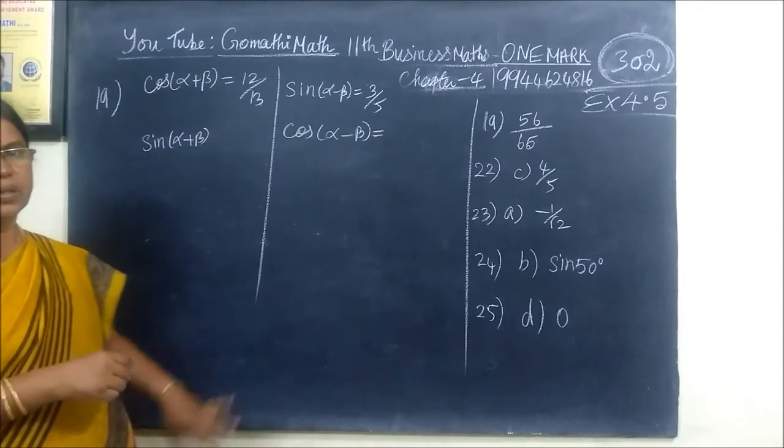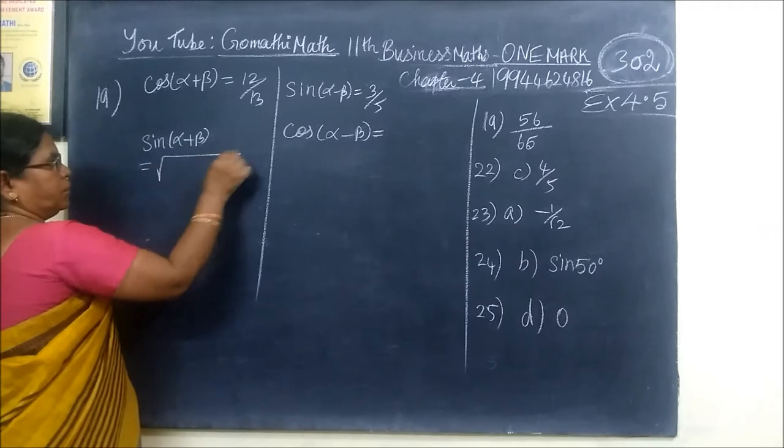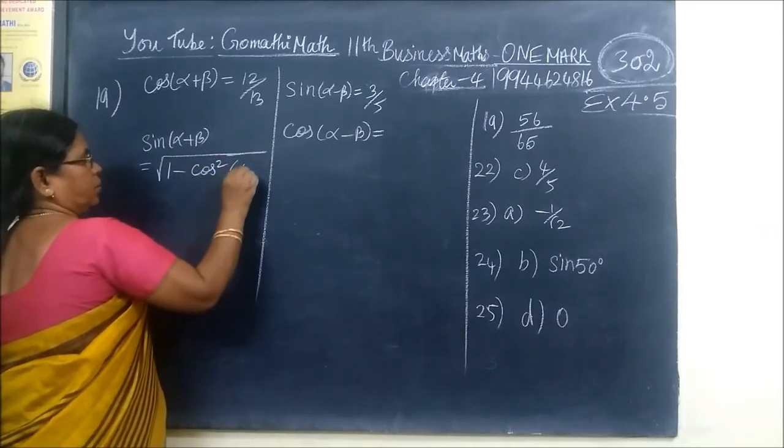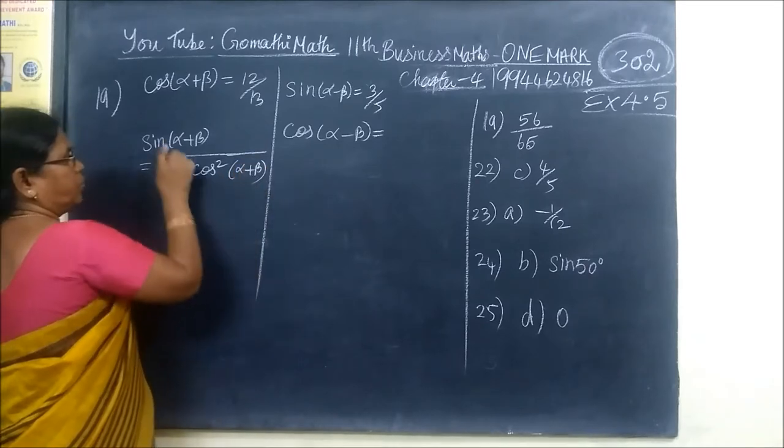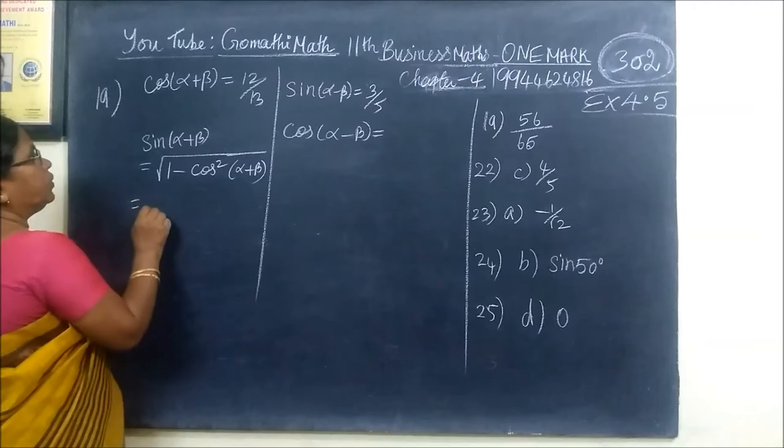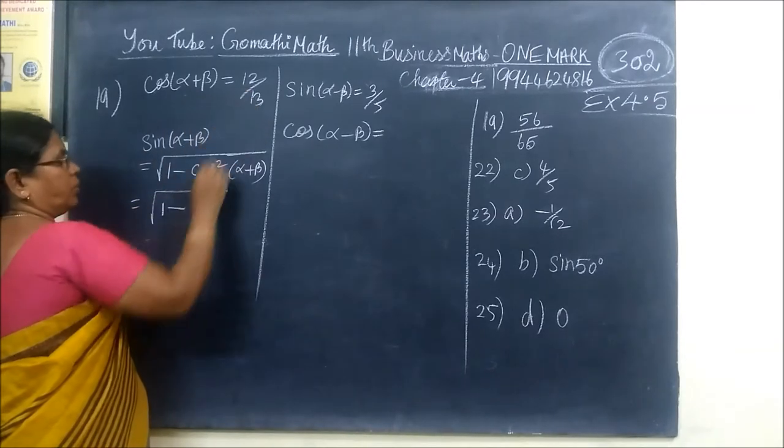This is cos of sin theta. Cos theta equals root of 1 minus cos square theta. From that level, we will substitute. Sin of this equals 1 minus cos square theta. Equal to 1 minus. This is the value. We will substitute.